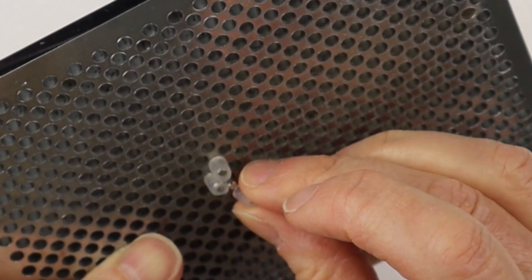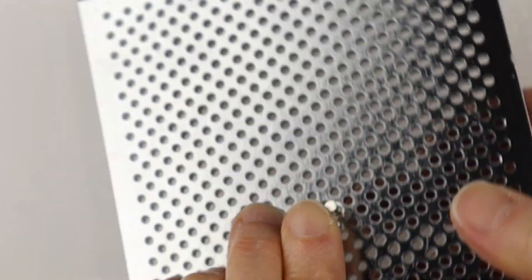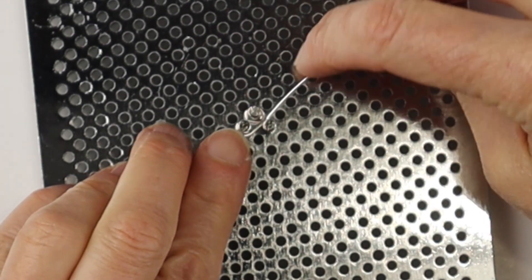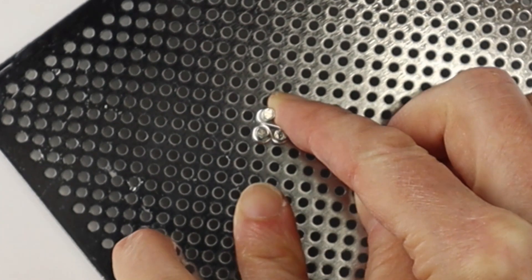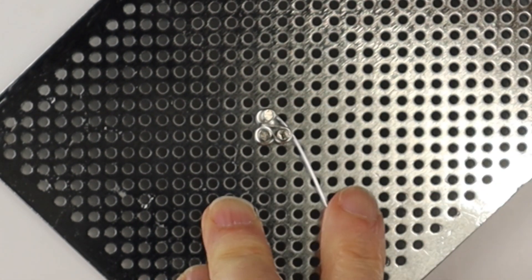Then we're going to add our next peg and put the little plug on the back to hold it in place, and then we're going to hold the wire and twist the jig around so we're getting a nice smooth curve.